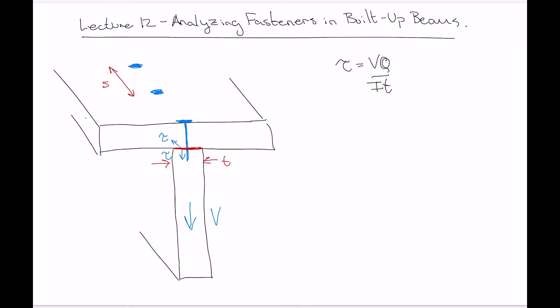If we've got a single nail or screw, what that dimension t is isn't particularly relevant to the amount of shear that fastener is going to need to withstand. The thickness could be a whole lot bigger and that doesn't matter if there's still only one nail or screw in the position. So what we do is take that thickness back out of the equation by multiplying it in on both sides: τt = VQ/I.